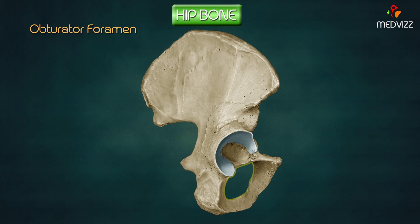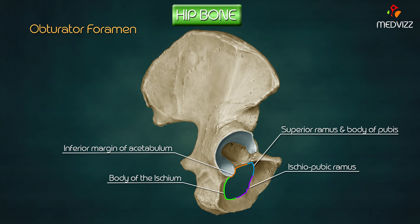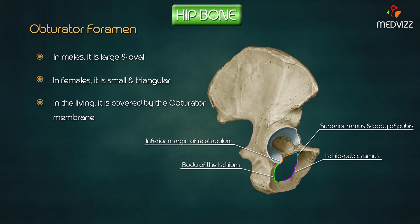The obturator foramen is a large opening in the bone between the pubis and ischium. Its boundaries are: above and in front — the superior ramus and body of the pubis; below and medially — the ischiopubic ramus; behind — the body of the ischium; above — the inferior margin of the acetabulum. In males it is large and oval; in females it is small and triangular. In the living, it is covered by the obturator membrane attached along the margin except in the upper part, which allows passage of the obturator nerve and vessels from the pelvis to the thigh.